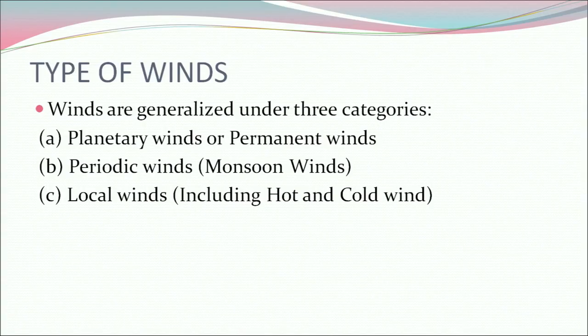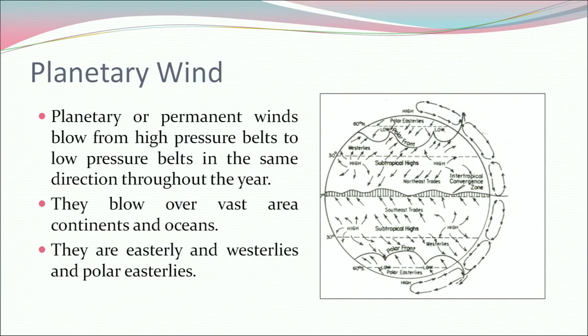Now, what are the types of winds? Winds are generalized under three categories: planetary winds or permanent winds, periodic winds or monsoonal winds, and local winds including hot and cold winds. Planetary or permanent winds blow from high pressure belts to low pressure belts in the same direction throughout the year. They blow over vast areas — continents and oceans. They are the trade winds (easterlies), westerlies, and polar easterlies.